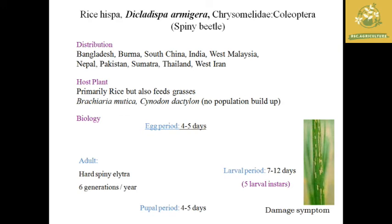Host plants of rice hispa: primarily rice, but also feeds on grasses like Cynodon dactylon and Brachiaria mutica, though population does not build up on those species. Biology: egg period 4 to 5 days; larval period 7 to 12 days; pupation 4 to 5 days; adult has 6 generations per year. Adults have a hot spiny elytra-shaped structure. In Tamil Nadu, found in all districts but mainly reported in Salem and Dharmapuri districts.